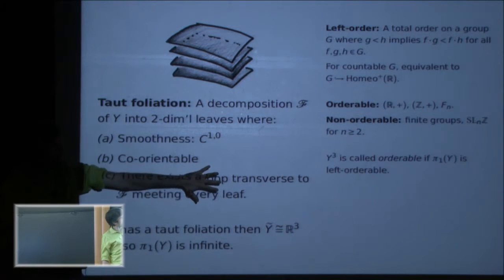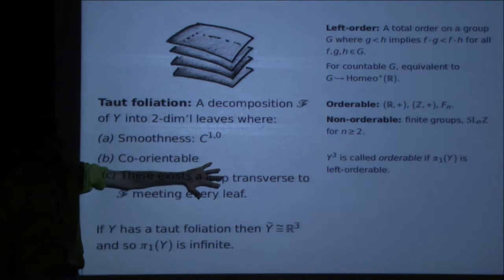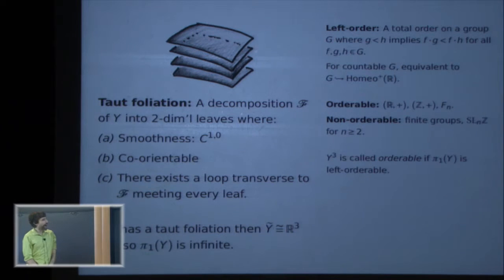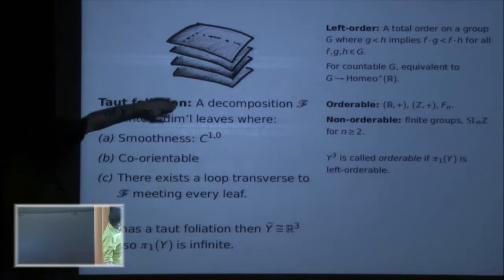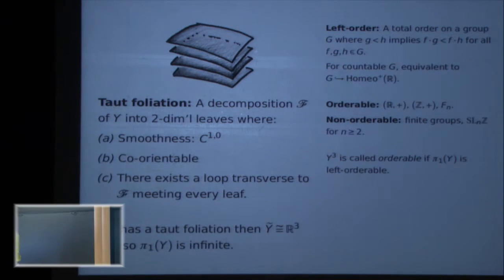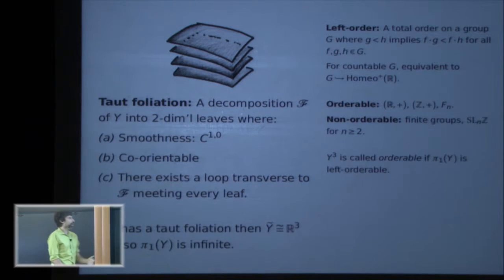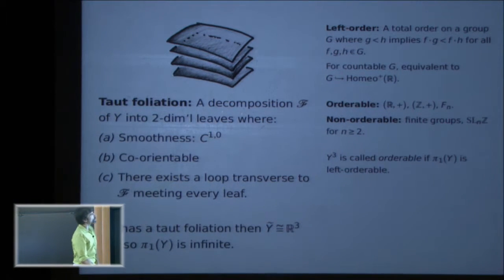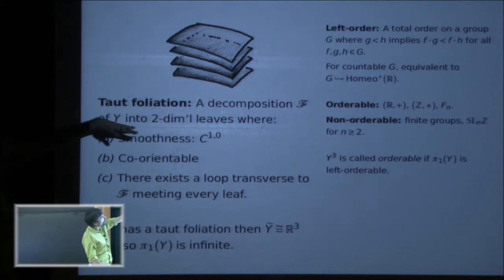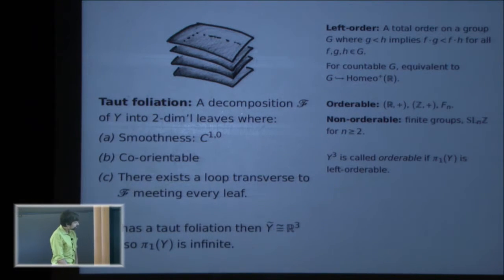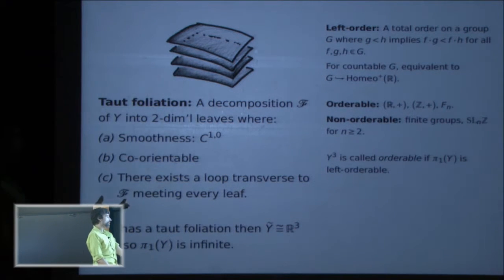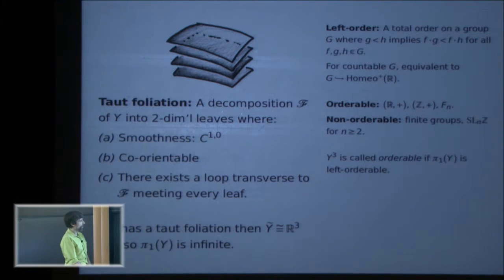So far, with just these first two conditions, this is a very floppy kind of object — every three-manifold has a foliation satisfying those two conditions. But if you add the additional condition that there's some loop in your three-manifold which is transverse to the foliation and meets every leaf, it turns out that, although that seems like not much of an additional assumption, the transverse dynamics end up being highly interesting, and that actually gives a big restriction on the topology of the manifold.